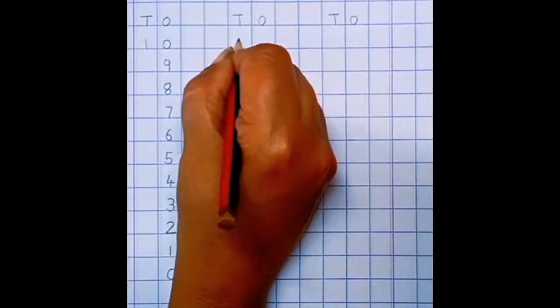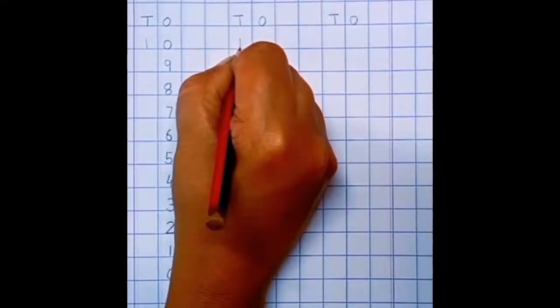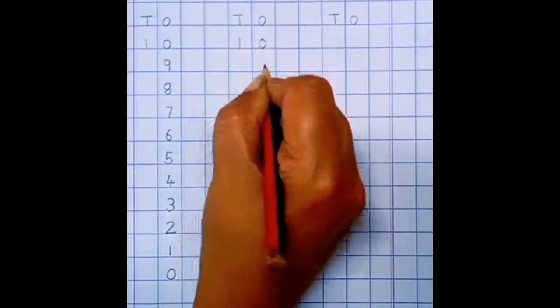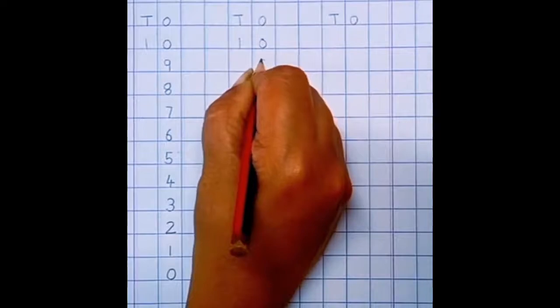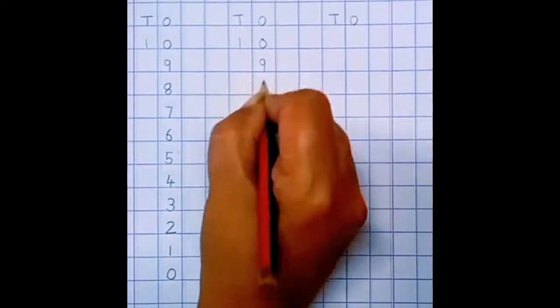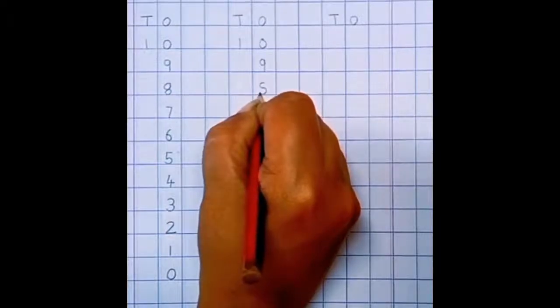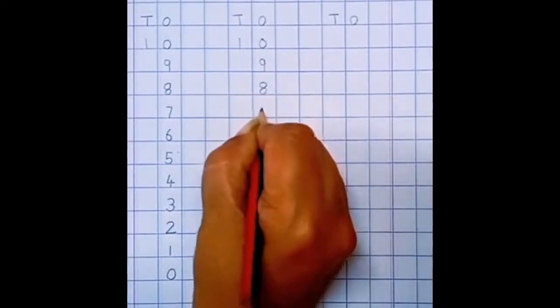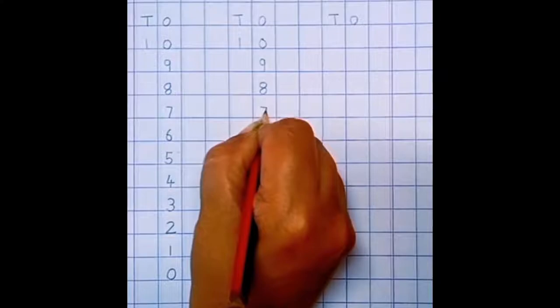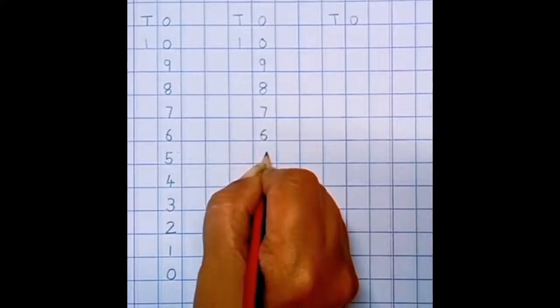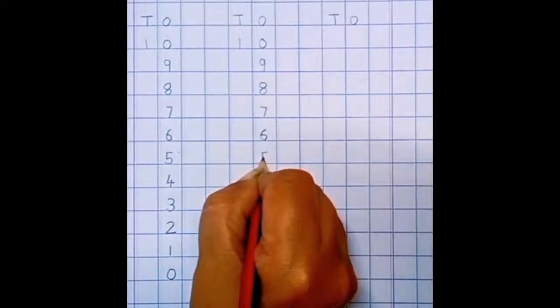Again 1 below T, 0 below O. 1, 0, 10. Now 9, 8, 7, 6, 5.